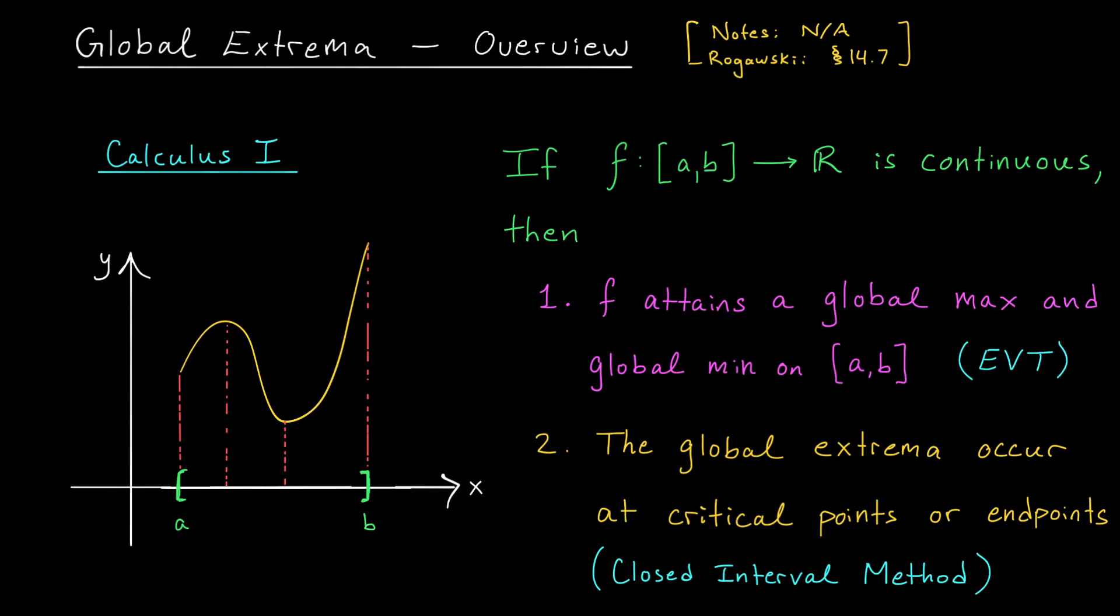Notice that this process doesn't involve the second derivative test at all. Since we're looking for the overall largest and smallest values we don't care about classifying points as local max, local min, or saddle points. We're just going to plug the candidates into the function and take the points that give us the biggest and smallest values.